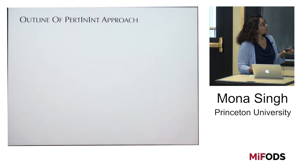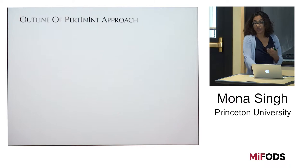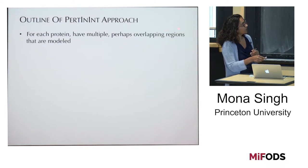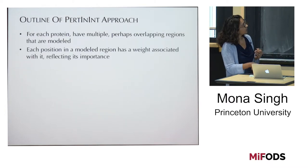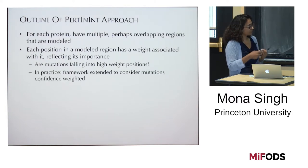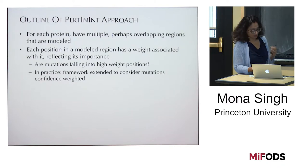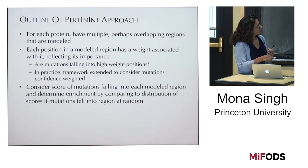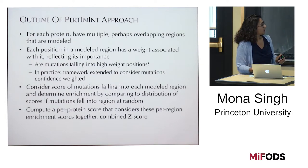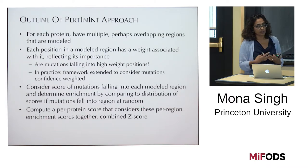The overall approach, which we call PERTINENT — from 'perturbed interactions,' and hopefully also pertinent for cancer — works as follows: for each protein, we have multiple perhaps overlapping regions that are modeled. Each position in a modeled region has a weight associated with it reflecting its importance. We ask whether mutations are falling into high-weight positions. In practice, the framework is extended to consider mutations weighted in some way. We compute a per-protein score that considers per-region enrichment scores together, giving a combined z-score.